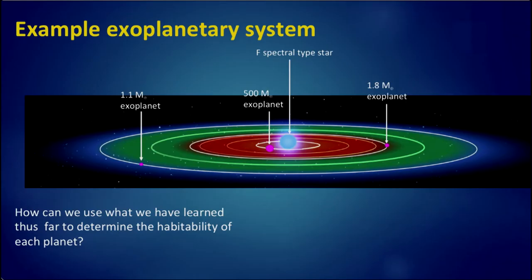Let's take an example exoplanetary system. Some hypotheticals here. Let's imagine an F spectral type star, one slightly more massive and bluer and hotter than the Sun, so its habitable zone is slightly further out than for the Sun and the solar system.